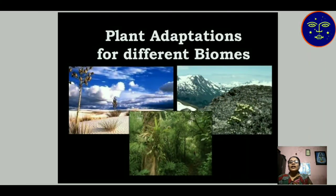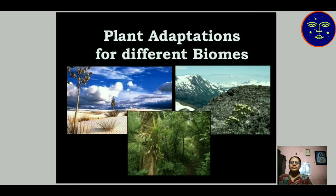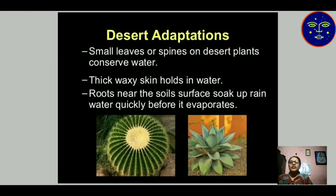Plant adaptations for different biomes — biomes mean different areas in which plants grow. For desert adaptation: small leaves or spines on desert plants conserve water. A thick, waxy skin is present, which has water-holding capacity. The roots near the soil surface suck up rainwater quickly before it evaporates.